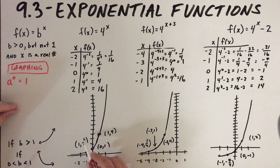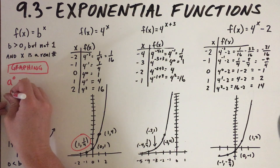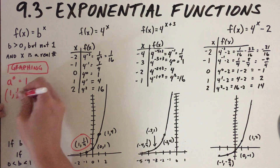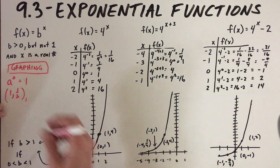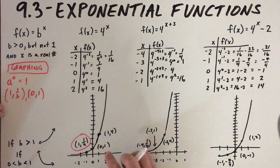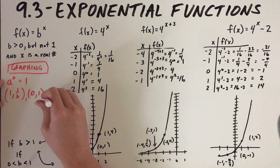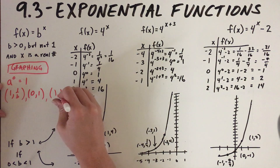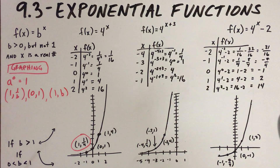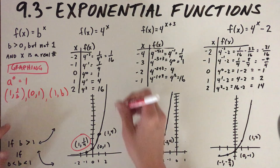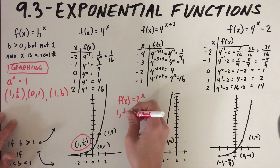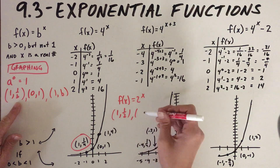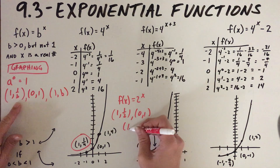I want you to note something about this graph: the points will always include (−1, 1/b) — whatever b is, in this case the base is four so it's (−1, 1/4) — we'll always have the point (0, 1) because anything to the zero power is one, and we'll always have the point (1, b). For instance, if f(x) = 2^x, then the points (−1, 1/2), (0, 1), and (1, 2) will all be on the graph.